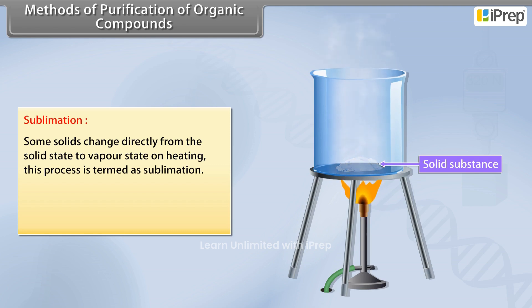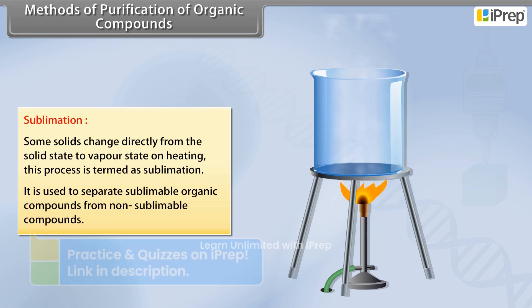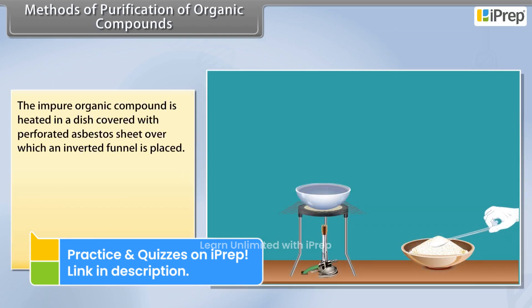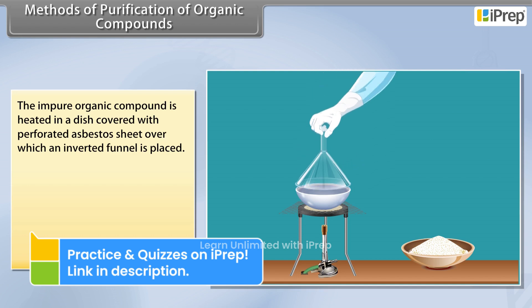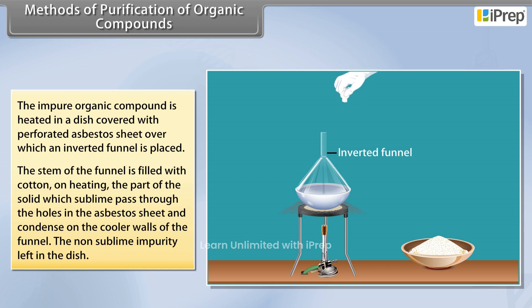Sublimation: some solids change directly from the solid state to vapor state on heating. This process is termed as sublimation. It is used to separate sublimable organic compounds from non-sublimable compounds. The impure organic compound is heated in a dish covered with a perforated asbestos sheet, over which an inverted funnel is placed.